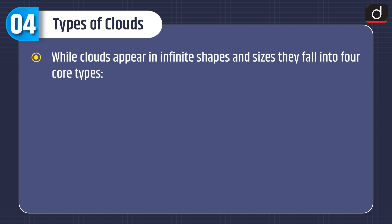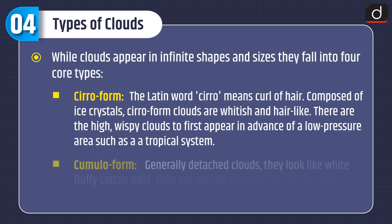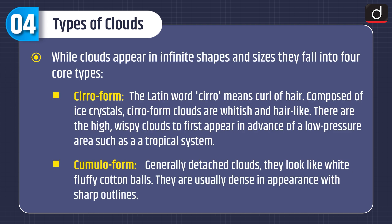Now let's discuss different types of clouds. Clouds appear in infinite shapes and sizes and fall into four core types. Kyroform: the Latin word 'kyro' means curl of hair; composed of ice crystals, kyroform clouds are whitish and hair-like — the high, wispy clouds that first appear in advance of a low-pressure area such as a tropical system. Cumuloform: generally detached clouds that look like white, fluffy cotton balls, usually dense in appearance with sharp outlines.